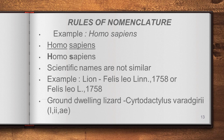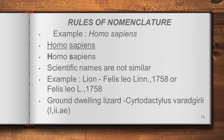Another rule: the scientific name of any two organisms must not be similar — each species has a unique name. No two species in the world share the same scientific name. Each and every species is denoted by a different name.